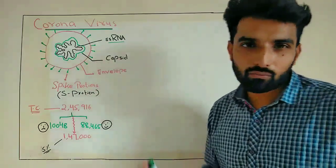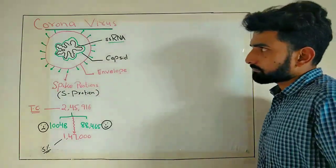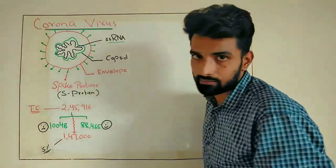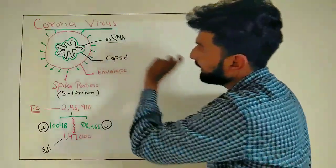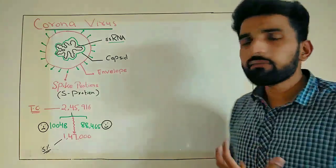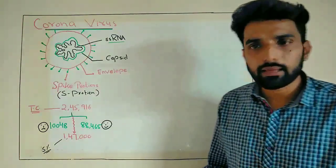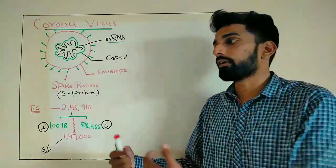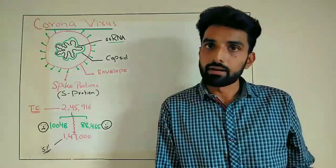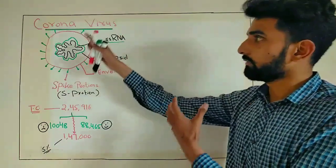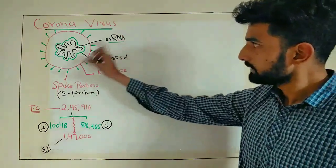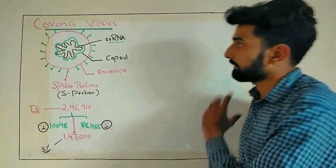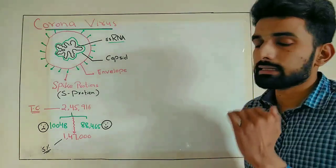If you look at the structure of this virus, you can see in the center there is a genome of this coronavirus, and that is single-stranded RNA. The genome of any virus can be of different types: single-stranded RNA, double-stranded RNA, single-stranded DNA, or double-stranded DNA. But for coronavirus, the genome is single-stranded RNA.